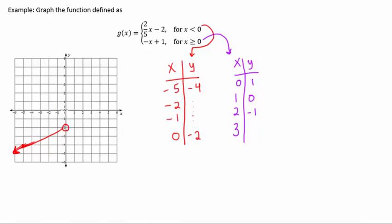And so 0, 1 is my first point, and that's going to be a filled-in circle because we are equal to 0 for the second function. And then it's going to go to 1, 0, 2, negative 1, and so on.